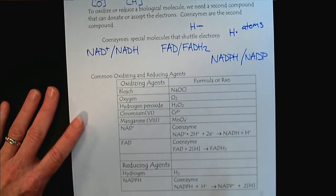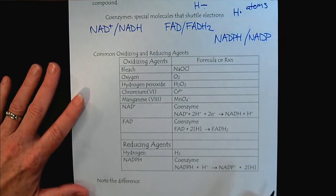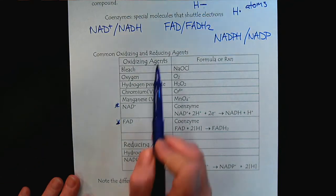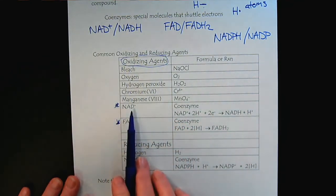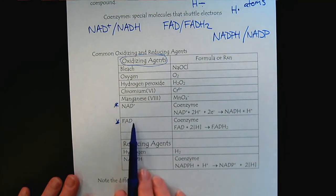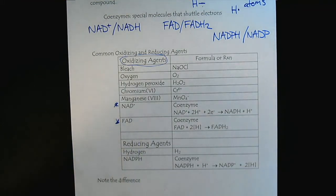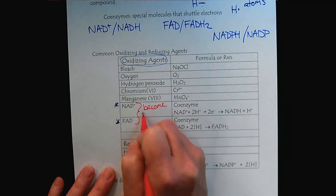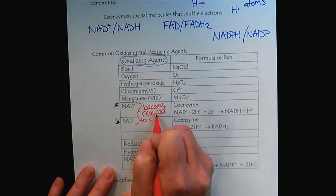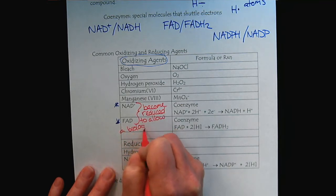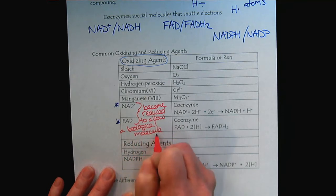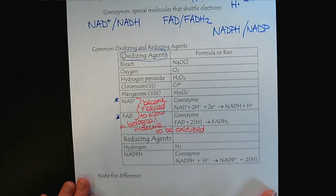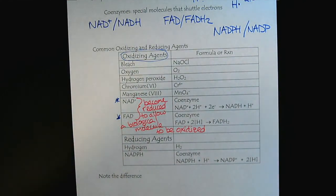Here are some common oxidizing and reducing agents to refresh our memory. Focusing on the coenzymes: NAD+ and FAD are listed as oxidizing agents. These coenzymes will become reduced, and by becoming reduced, they allow our biomolecule to be oxidized. If you're feeling fuzzy on the language of oxidizing and reducing agents, there is a previous video tutorial that will summarize this for you.